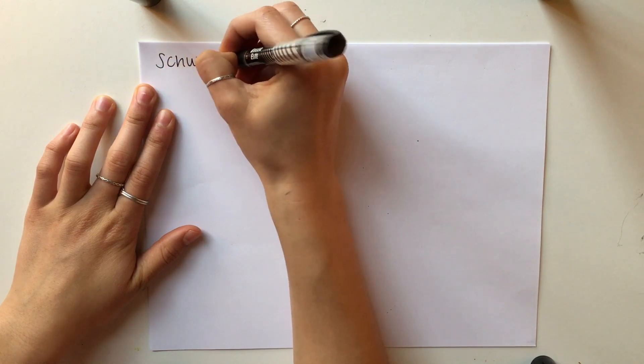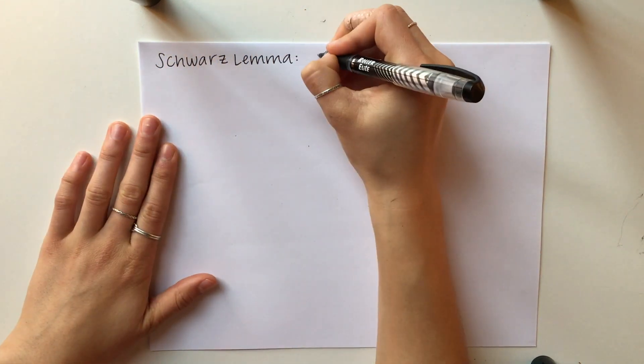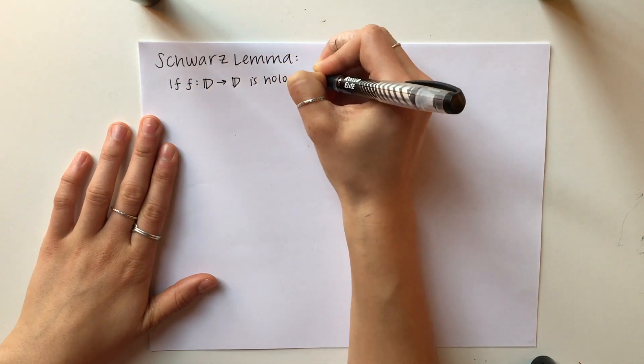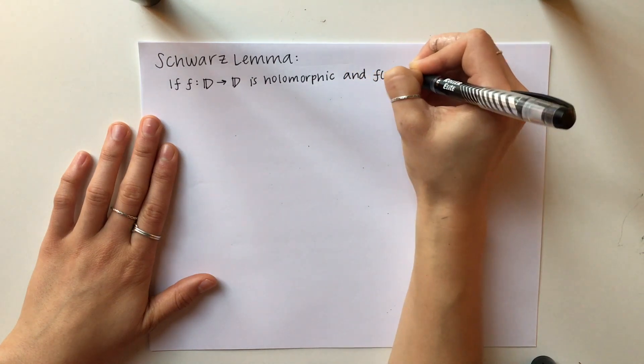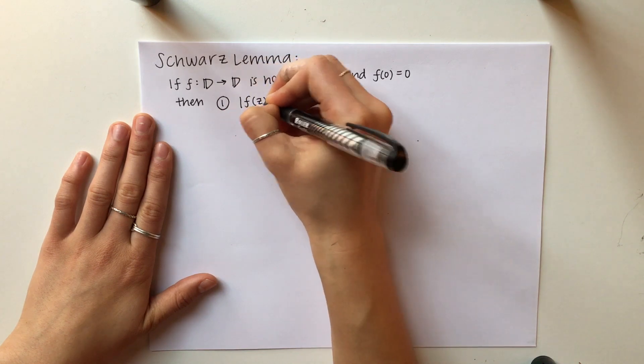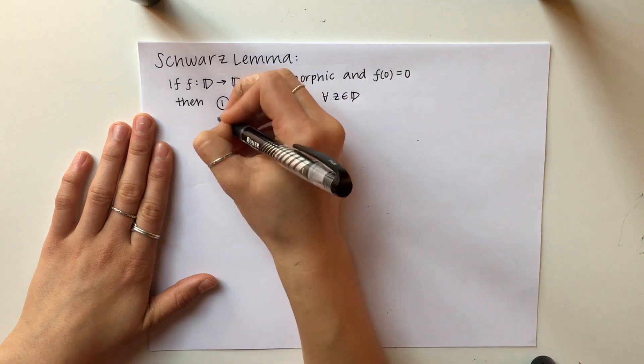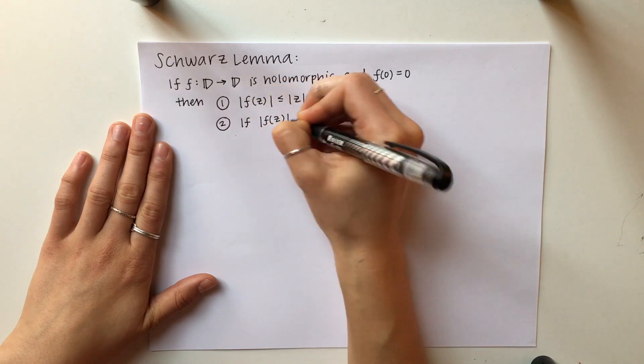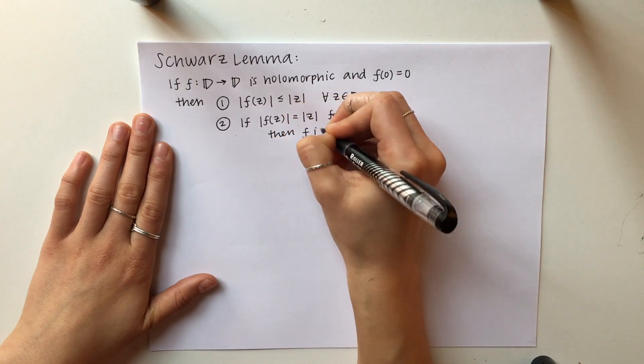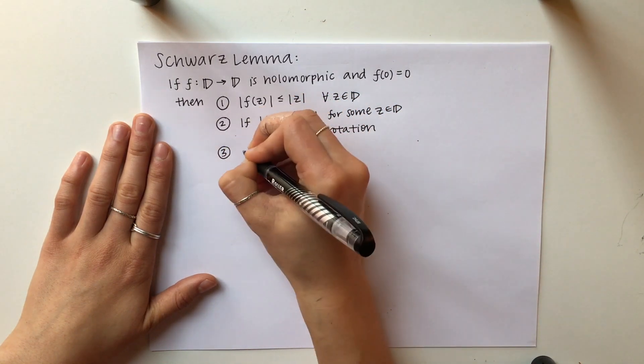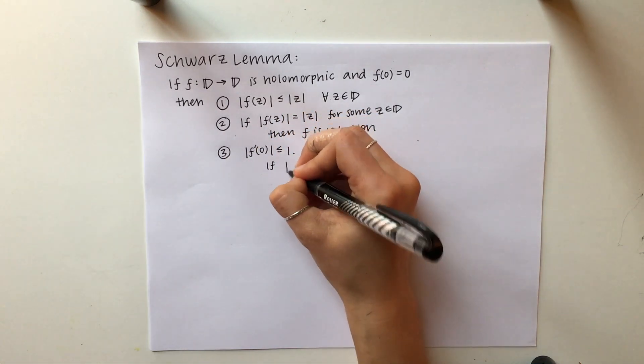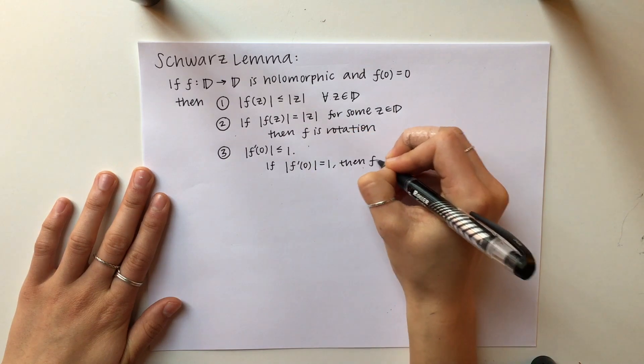Next, we will look at Schwartz Lemma and a very easy, understandable way to prove it. The lemma says that if F is a function that maps the unit disk to itself, and F is holomorphic and maps zero to zero, then three statements follow. The first one says that F is bounded by the input Z. The second one says that if F of Z equals the modulus of Z for some Z, then F is a rotation. And the last one says that the derivative of F at zero is bounded by one, and if there's an equality with that, then F is a rotation.